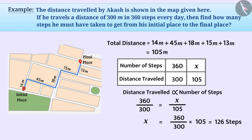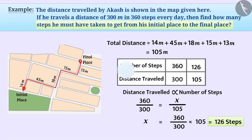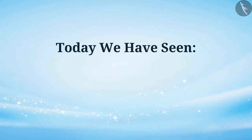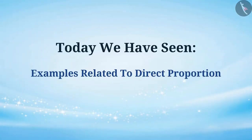Therefore, Akash must have travelled 126 steps from his initial place to his final location. Now you must have understood direct proportion clearly. Today we have seen some more examples related to direct proportion.